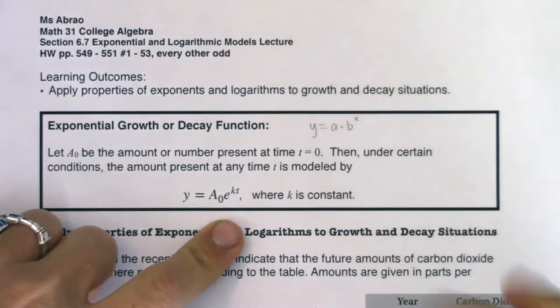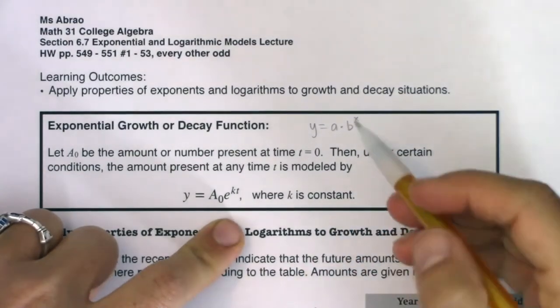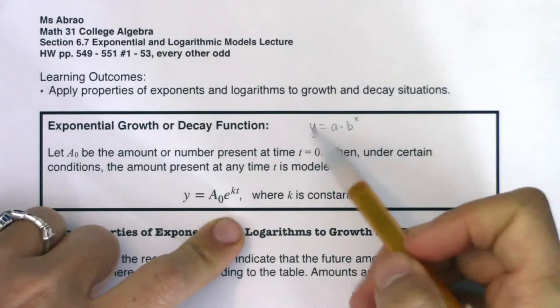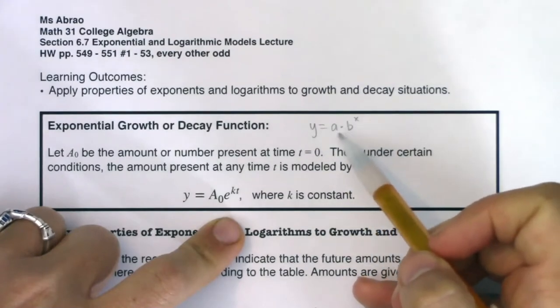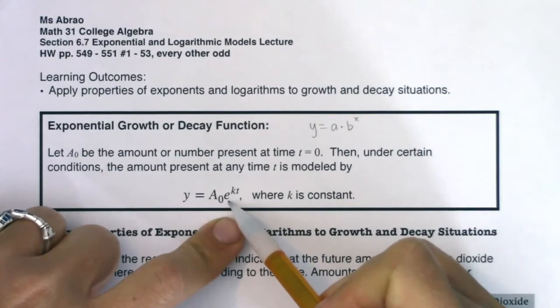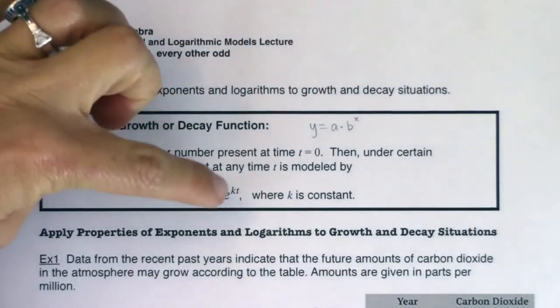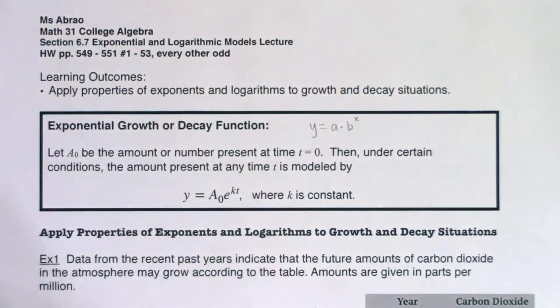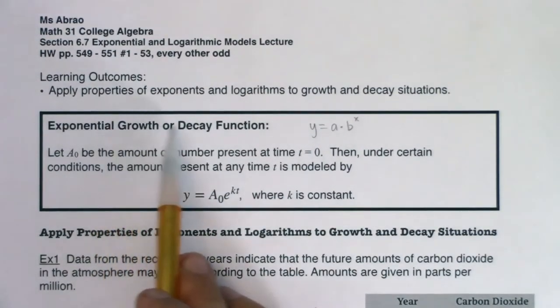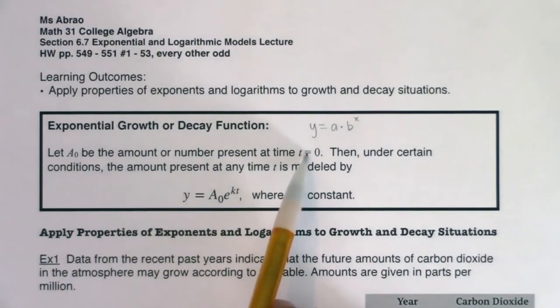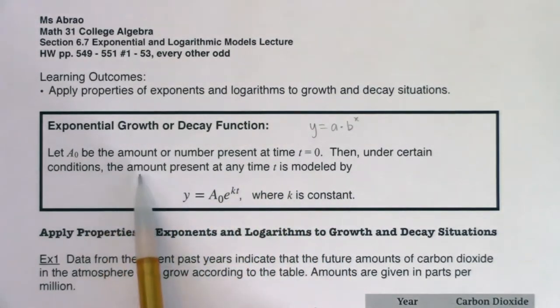We're going to rework some of these exponential growth type problems, looking at an exponential model with base e. In any of these problems, as long as it's exponential growth or decay, your base can be any number. Where in 6.1 we were using base b, I'm going to specifically target base e in this section. Let A₀ be the amount or number present at time t equals zero. Then under certain conditions, the amount present at any time t is modeled by y equals A₀e^(kt), where k is a constant.